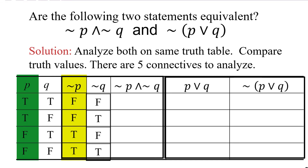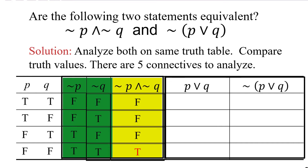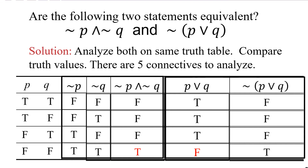An and statement is only true when both components are true. So using columns 3 and 4, we see that the only place that there are two trues is in the bottom row, so that's going to be true and the rest are going to be false. Now let's analyze P or Q. P or Q says that a statement is only false if both components are false, which only happens in the fourth row at the bottom. So we have three trues and a false. Now we're going to negate that to get the last column, so the opposite of those truth values would be false, false, false, true.